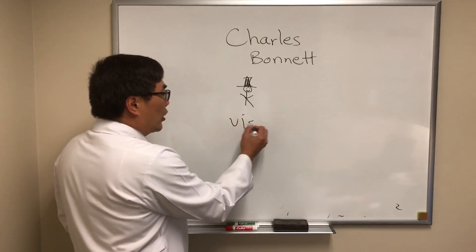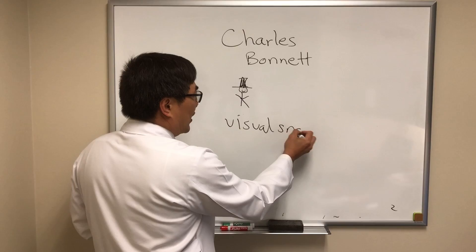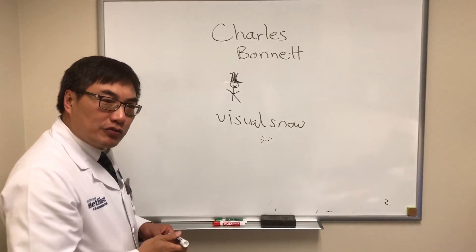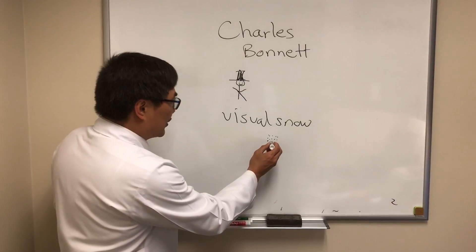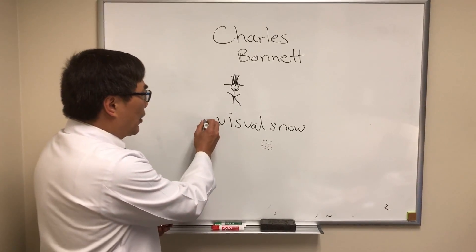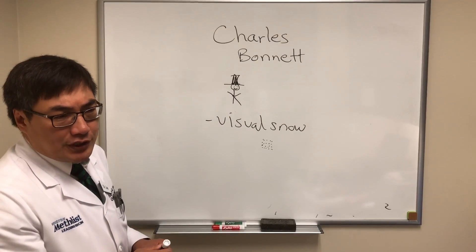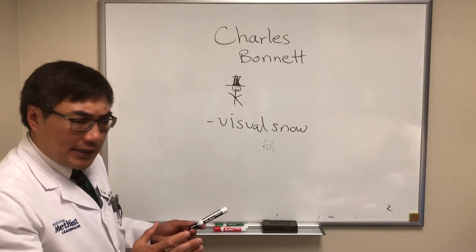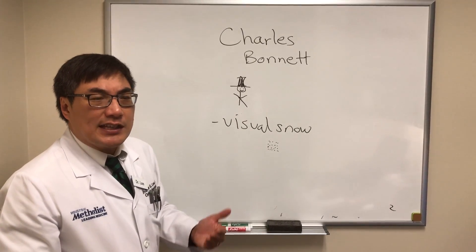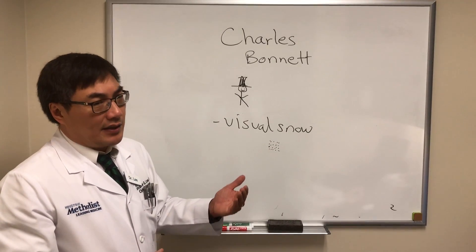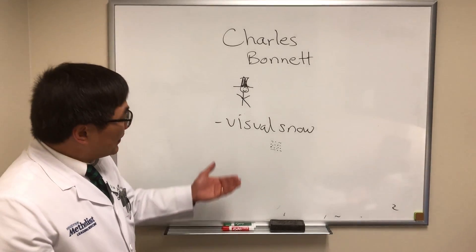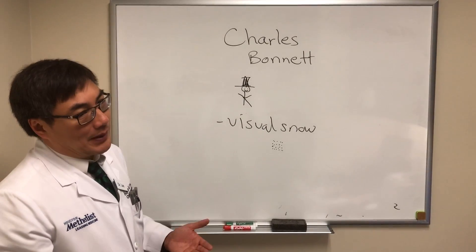Visual snow is a different type of phenomenon where patients see pixelation. It's usually diffused throughout their entire field of vision and they describe it like looking through snow. It's usually both eyes simultaneously and persistent, although it varies under different lighting conditions. Visual snow is probably just increased sensitivity to an existing visual phenomenon that most people ignore.